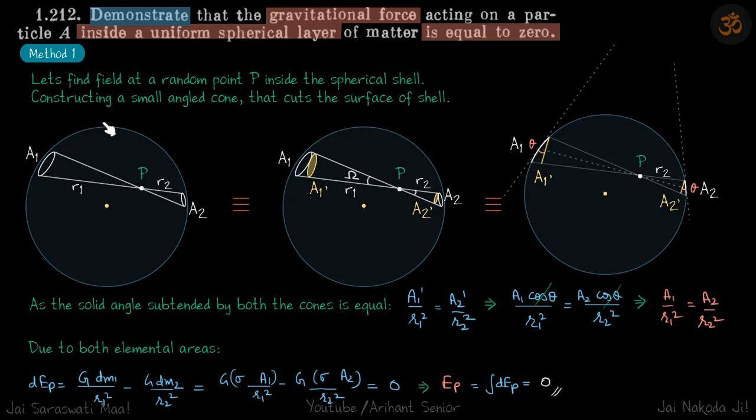Here we will take any random point P inside the shell and then take a small angled cone which extends on both sides of this point P. Let's say that cone will cut the surface of the shell here, and this area where it cuts the shell is A1 and this area is A2.